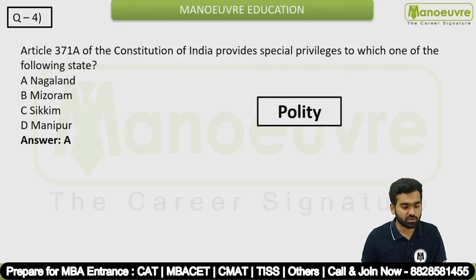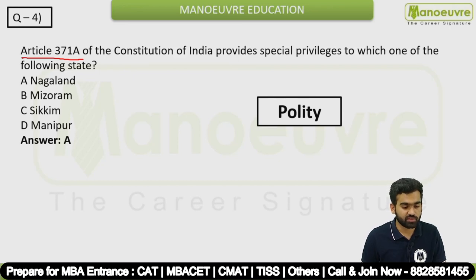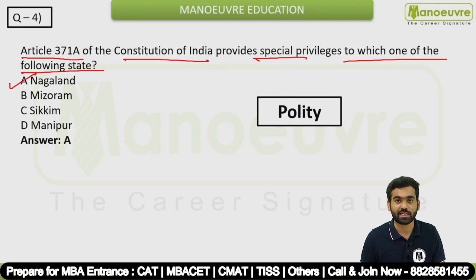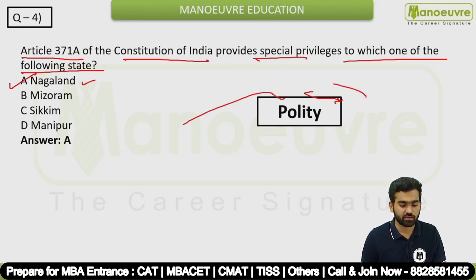Question 4 is a polity question about Article 371A. Article 371A of the Constitution of India provides special privileges to which state? The answer is option A — Nagaland. This is a polity-related static question.